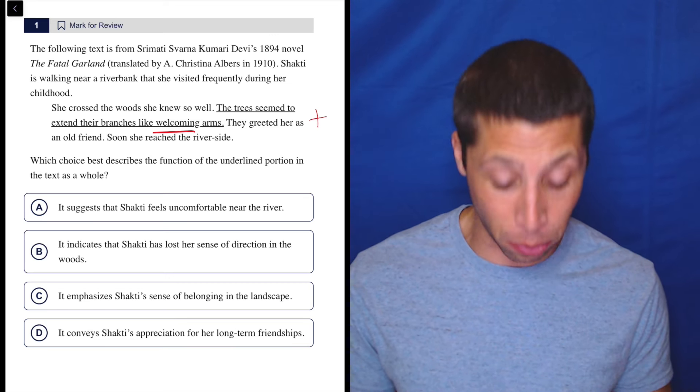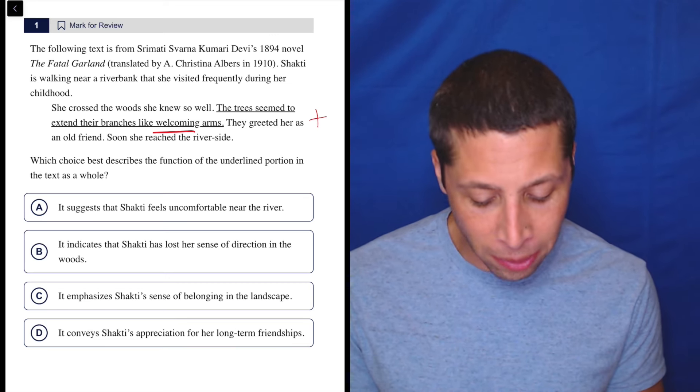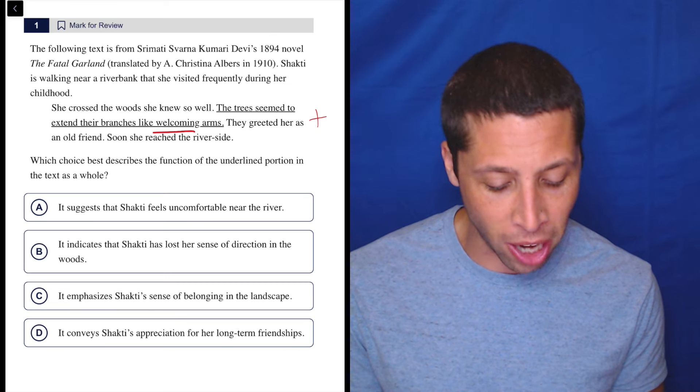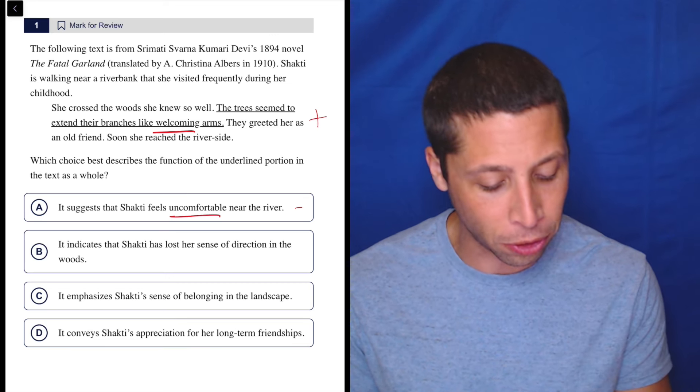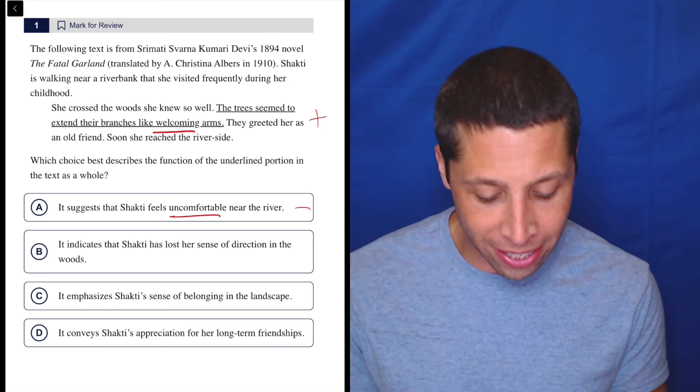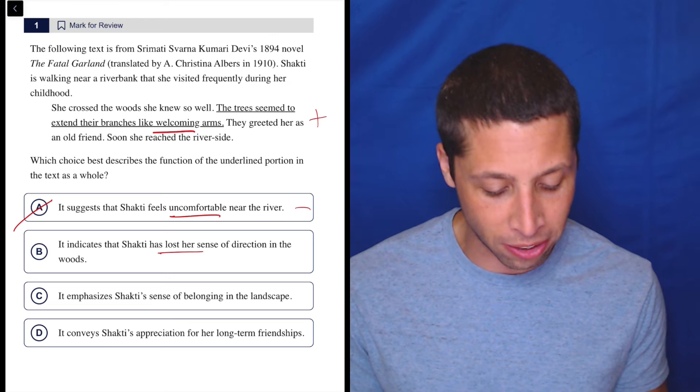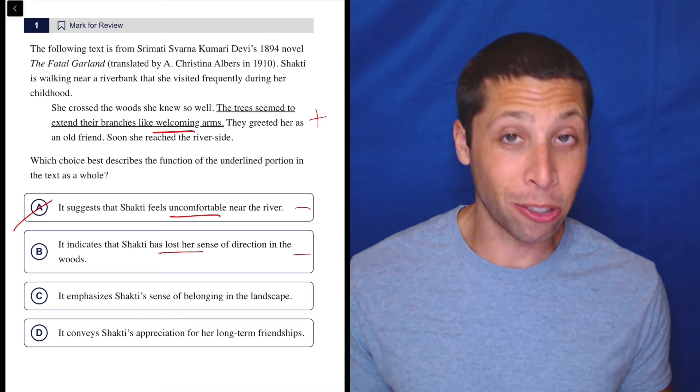So what is the function of the underlined portion? Well, it seems positive, so it probably isn't going to be the case that it suggests Shakti feels uncomfortable near the river - that seems negative. B, it indicates that Shakti lost her sense of direction in the woods - that also seems bad.